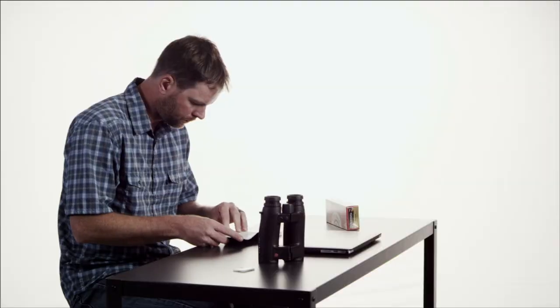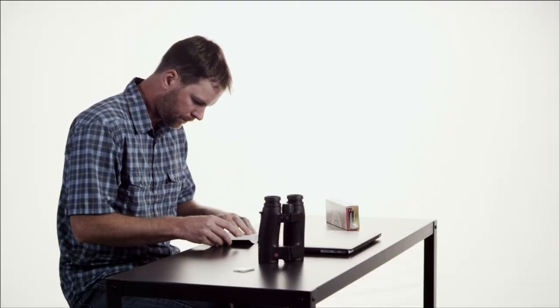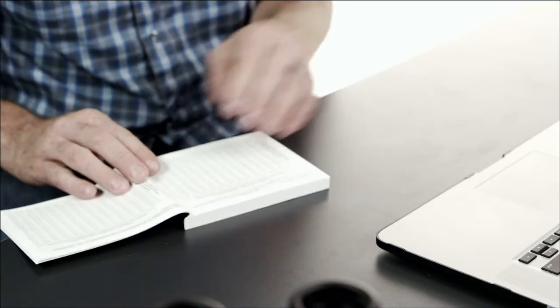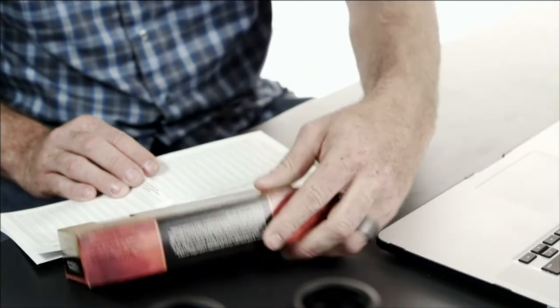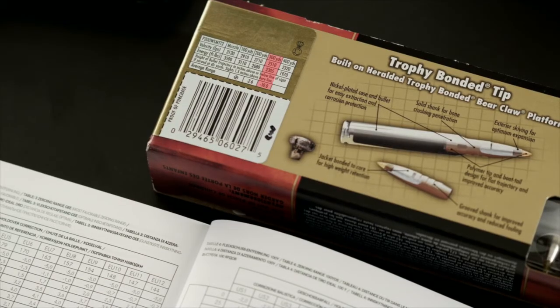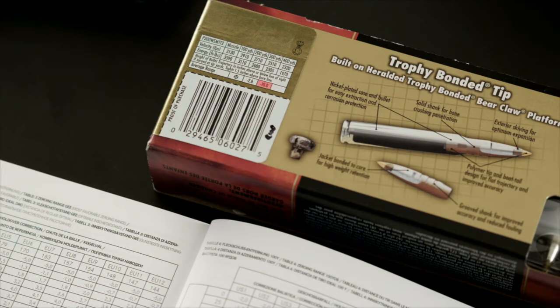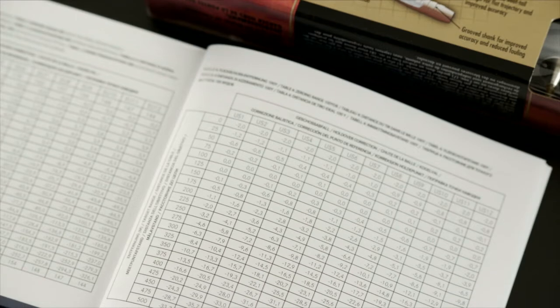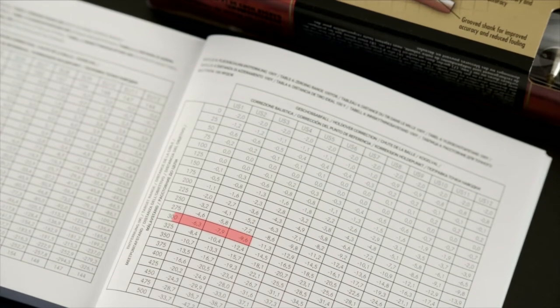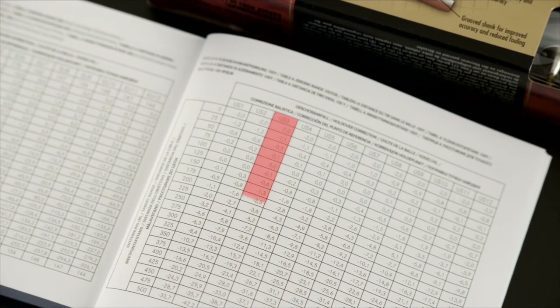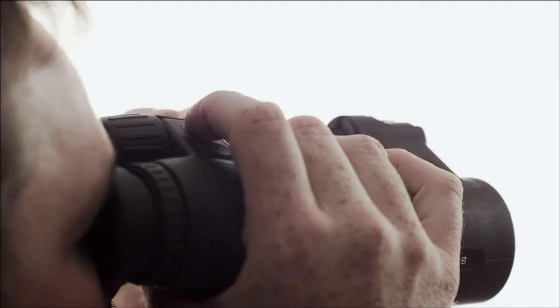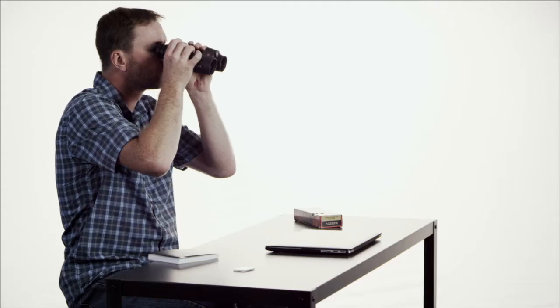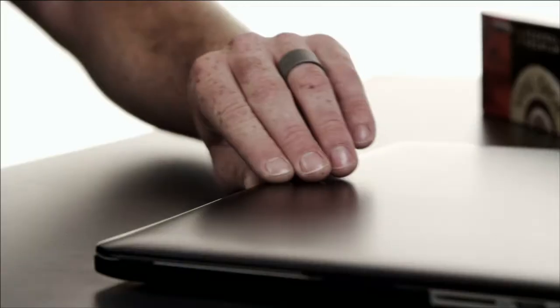The first step in setting up the Geovid HTB is to determine how you'll input your specific ballistic information. The first way is to reference the tables on the back of your box of ammunition. Find the amount of bullet drop at the furthest distance available. In this case, 10 inches at 300 yards. Find the value that matches closest in the Geovid manual. In this case, 9.6 inches. This corresponds with the US-3 ballistic curve and is what you would select in the Ballistics menu in the Geovid.